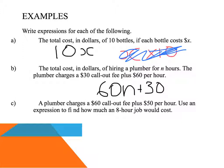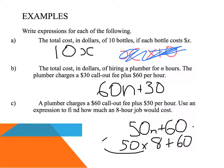Okay, now a plumber charges a $60 call-out fee, $60 call-out fee this time, plus $50 an hour. $50 an hour, and I'll use N again. $60 call-out fee and $50 an hour. Use an expression to find out how much an 8-hour job would cost. Well there's my expression. $50 times how many hours? 8 hours plus 60. 8 fives are 40, so 50 times 8 is 400 plus the $60 call-out fee. So altogether it would cost me $460.